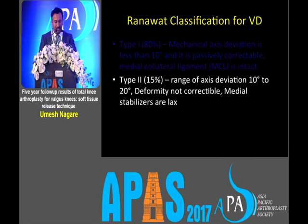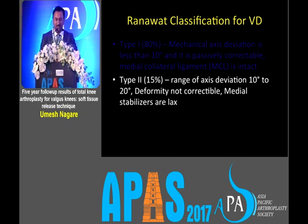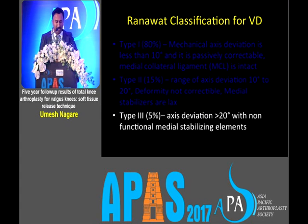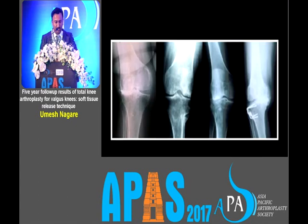In type 2, the range of axis deviation is 10 to 20 degrees, deformity is correctable, and medial stabilizers are lax but intact. And type 3 has axis deviation more than 20 degrees with non-functional medial stabilizing elements. So we use this classification.